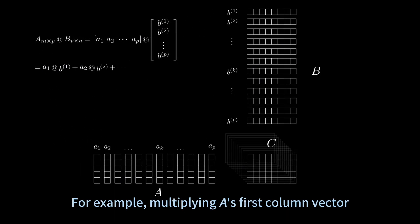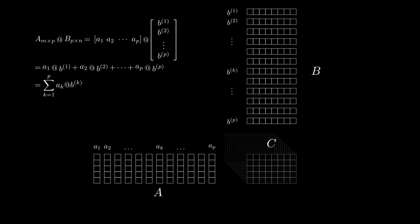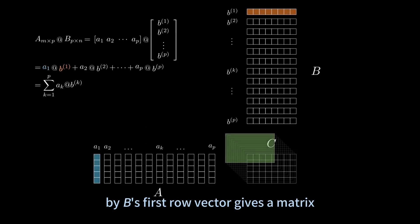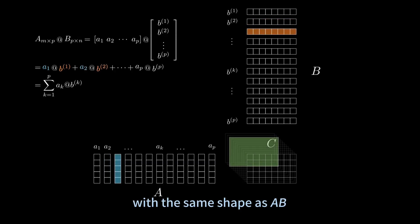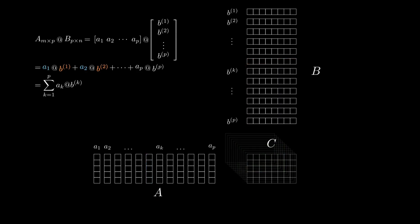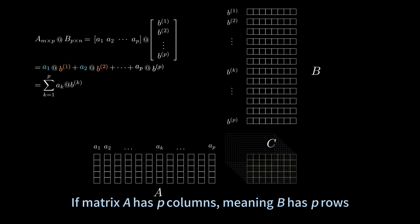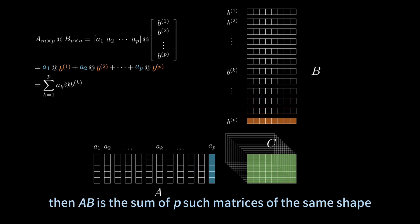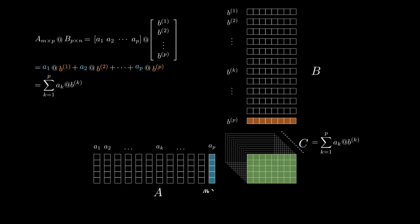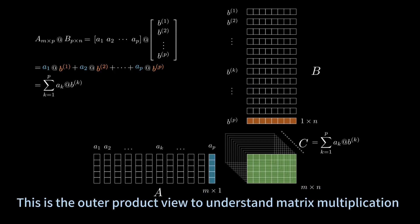For example, multiplying A's first column vector by B's first row vector gives us a matrix with the same shape as matrix A times matrix B. If matrix A has p columns — meaning B has p rows — then the product of A times B is the sum of p such matrices of the same shape. This is the outer product view to understand matrix multiplication.